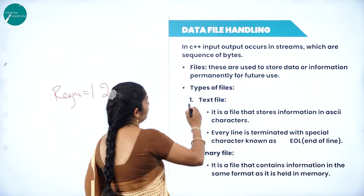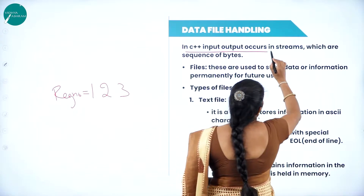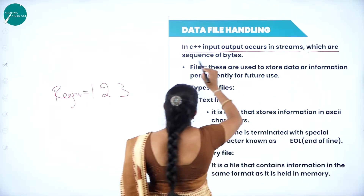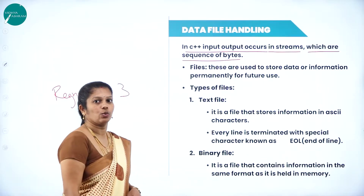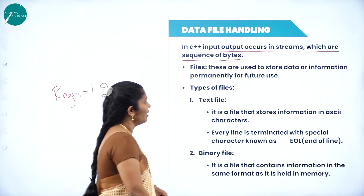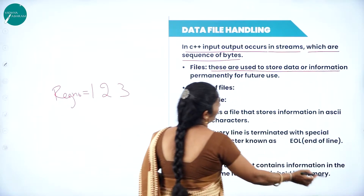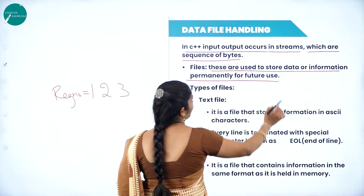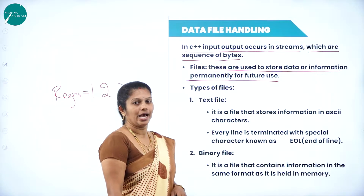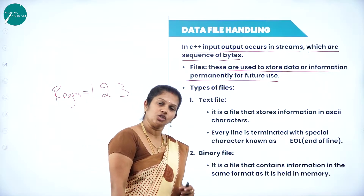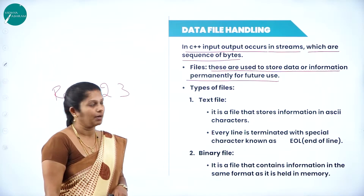In C++, input and output occurs in streams, which are sequences of bytes. Files are used to store data or information permanently for future purpose.